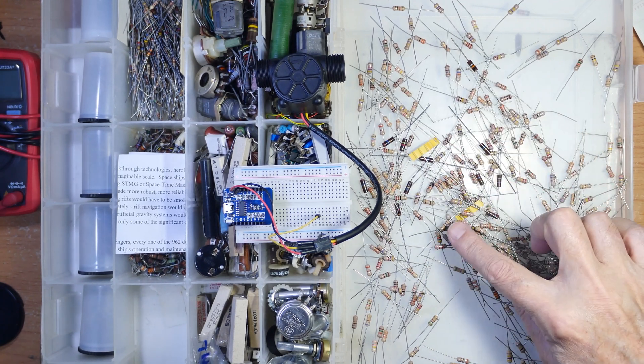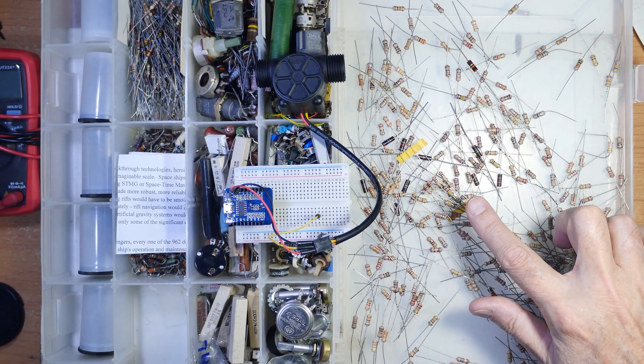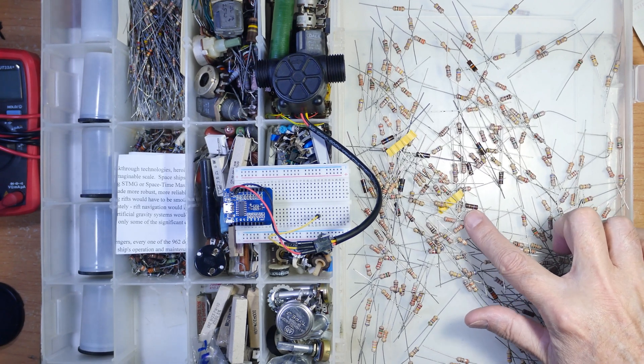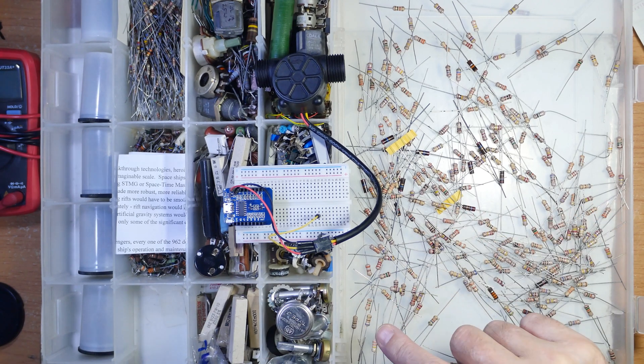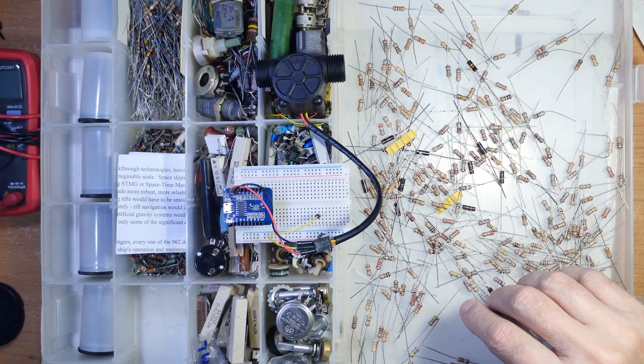But I could save myself all this headache because had I just soldered up a voltage divider and kept it in my Arduino RPI box, I would have one right now and everything would be hunky-dory.